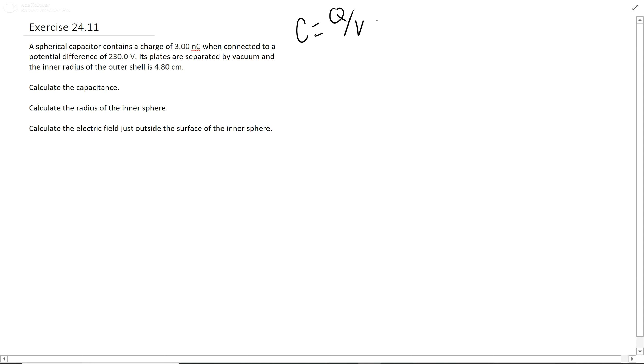which we know Q and V. So we can just do 3 times 10 to the negative 9, because you do want to make sure that you convert it into coulombs. And then that is over 230 volts that they give you, which gives 1.3 times 10 to the negative 11 farads.